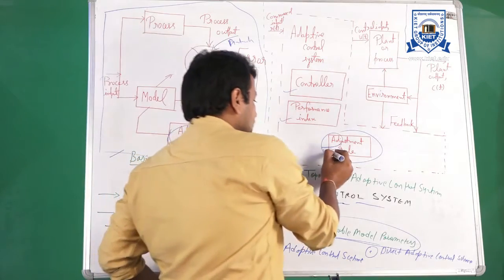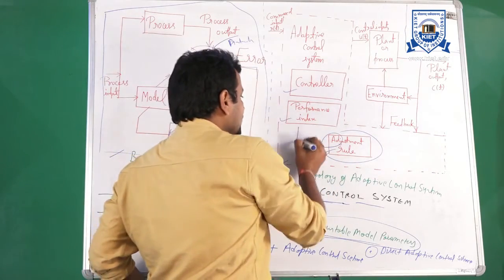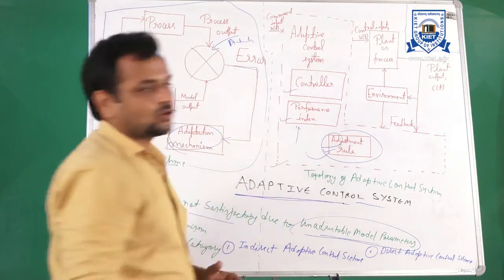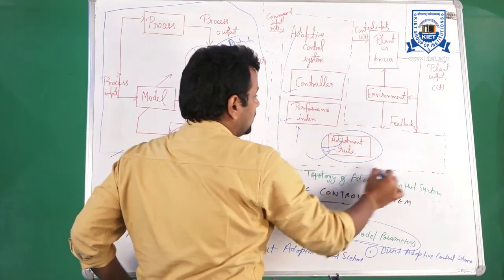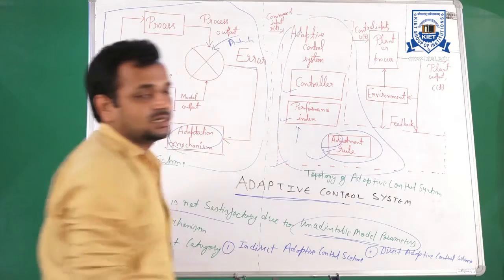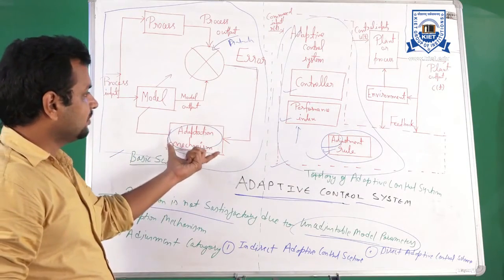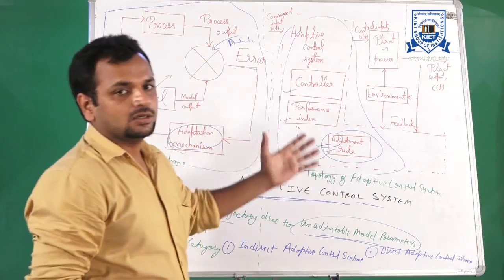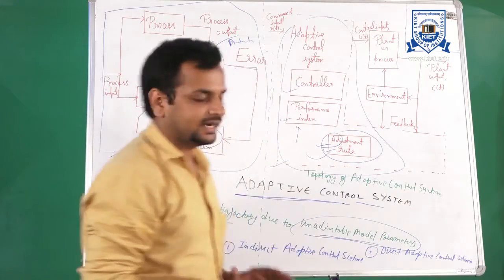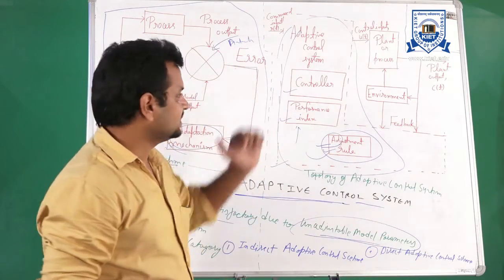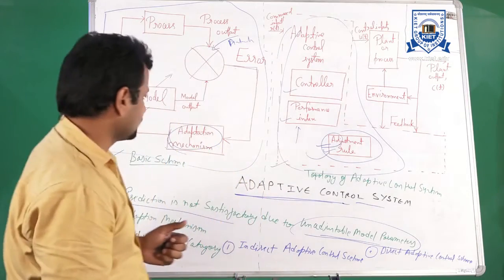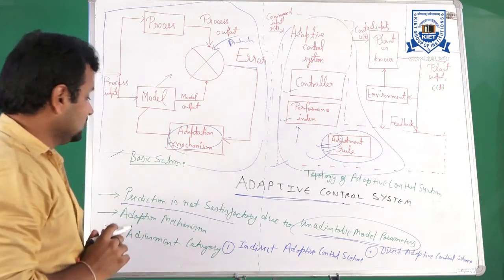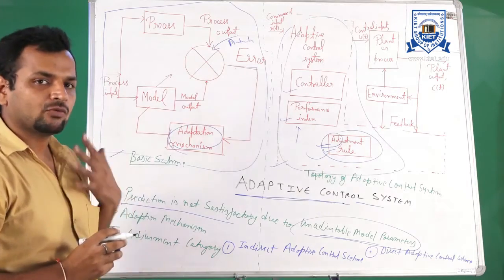After the adjustment rule is defined, we can define the performance index of the controller, which then feeds into the controller. This is the whole picture of the adaptive control system. The adoption mechanism block includes the adjustment rule for overcoming the disadvantages of unadjustable model parameters, the performance index, and the controller. We can define the adaptive control scheme in two ways.